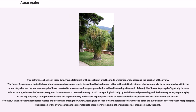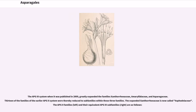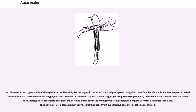A 2002 morphological study by Rudall treated possessing an inferior ovary as a synapomorphy of the Asparagales, stating that reversions to a superior ovary in the core Asparagales could be associated with the presence of nectaries below the ovaries. However, Stevens notes that superior ovaries are distributed among the lower Asparagales in such a way that it is not clear where to place the evolution of different ovary morphologies. The APG3 system, published in 2009, greatly expanded the families Xanthorrhoeaceae, Amaryllidaceae, and Asparagaceae, with 13 families of the earlier APG2 system thereby reduced to subfamilies within these three families.